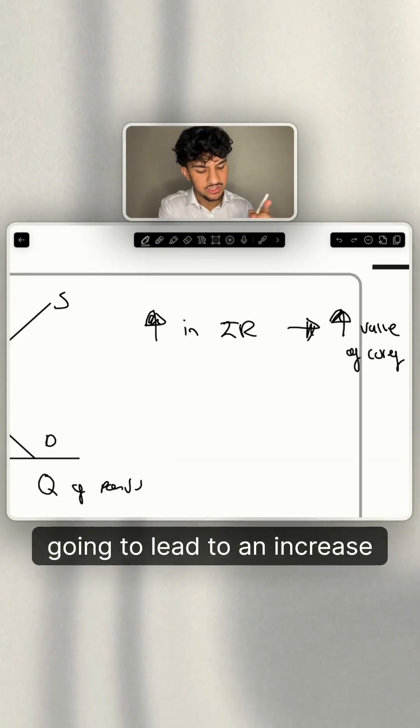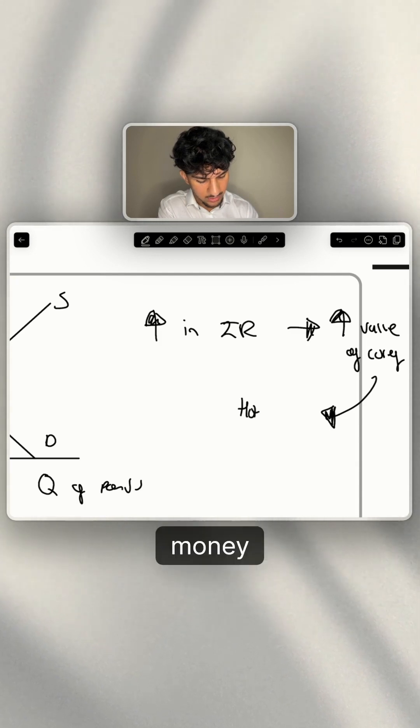Now, try to think, why is an increase in interest rate going to lead to an increase in the value of the currency? And that is due to a concept called hot money flows.